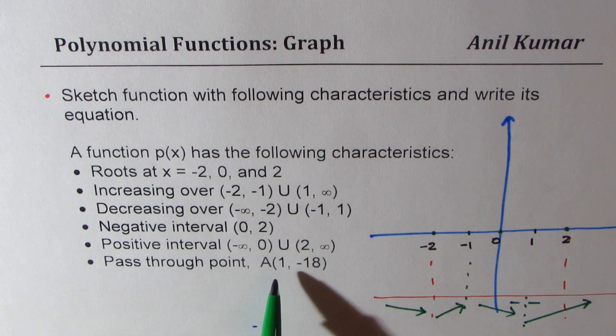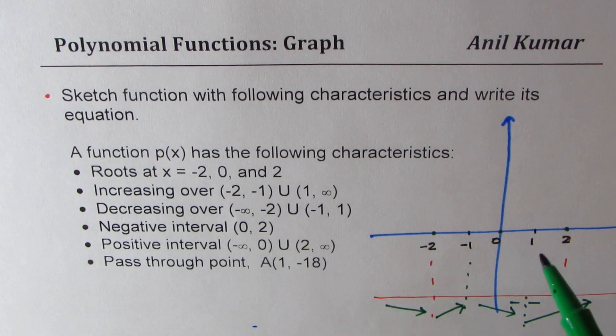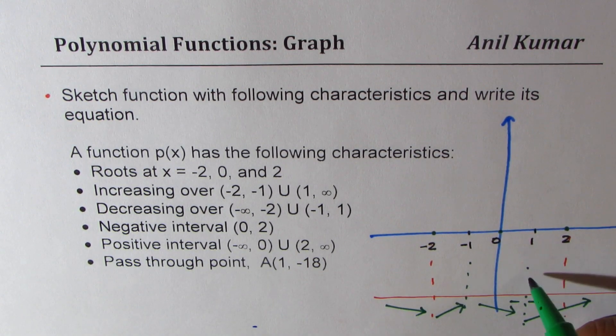And it passes through the point (1, -18). So here it passes through some point. So we'll keep it here. It is also negative, so that makes sense.